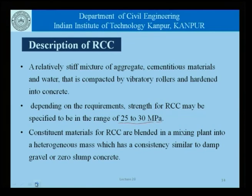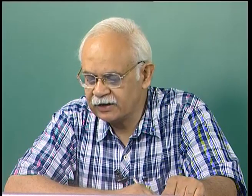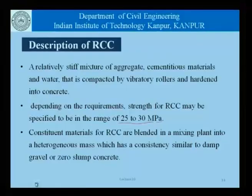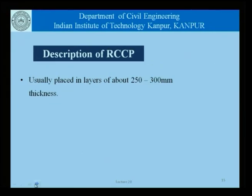The constituent materials for RCC are blended in a mixing plant into a heterogeneous mass having the consistency of damp gravel or zero slump concrete. The basic principles of concrete engineering are not violated — we still have the same materials: aggregate, cementitious materials such as cement and fly ash, and water — except that we compact using rollers, and the product hardens into concrete. The layer thickness is usually about 250 to 300 mm.